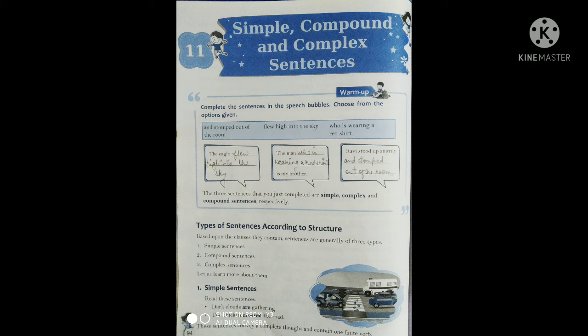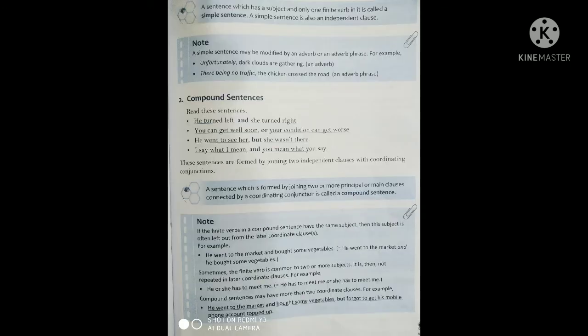First of all, we will talk about Simple Sentences. A sentence which has a subject and only one finite verb is called a Simple Sentence. A Simple Sentence is also an independent clause. Single finite verb हो और एक Simple Complete Sentence हो, then it is known as a Simple Sentence — यानि एक independent clause से बना हुआ sentence हमारा Simple Sentence होता है। इसमें एक finite verb होता है, and it is modified by an Adverb and an Adverb Phrase.